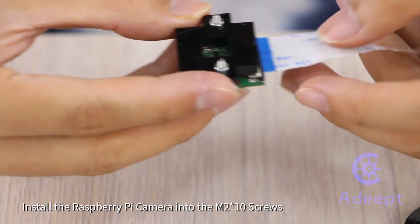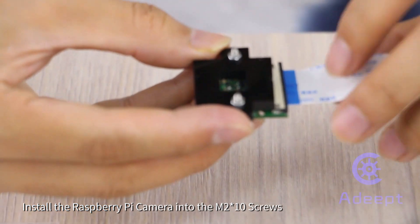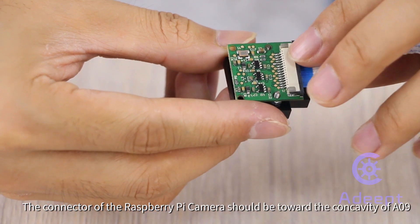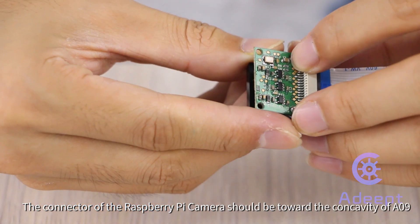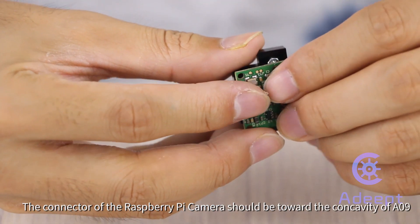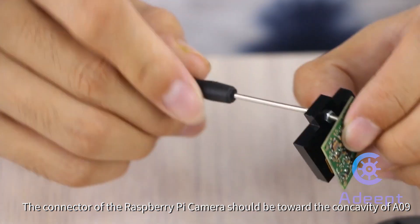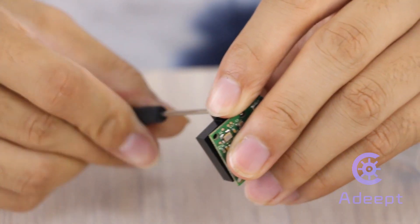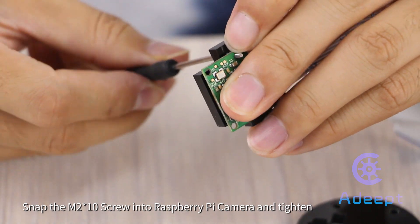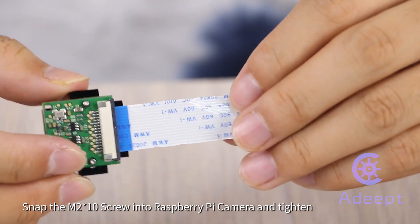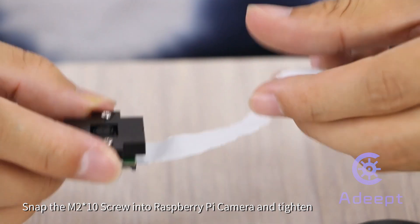Install the Raspberry Pi camera into the M2 multiple 10 screws. The connector of the Raspberry Pi camera should be toward the concavity of A09. Snap the M2 multiple 10 screw into Raspberry Pi camera and tighten it.